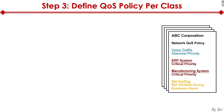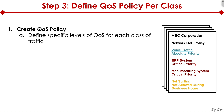The final step is step three: you define QoS policy for each class. As you can see on the right-hand side, when you're done with steps one and two, you might say ABC Corporation gets this network QoS policy — voice traffic is absolute priority, ERP system is critical priority, manufacturing system is critical priority, whereas web surfing is not allowed during business hours. You create a QoS policy that defines different service levels for each class of traffic.